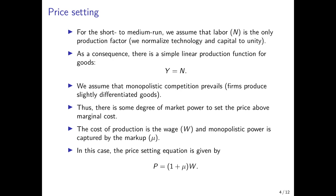These long-run phenomena are dealt with in long-run economic growth models — the Solow model, Ramsey-Cass-Koopmans model, Diamond model, and so on — that capture capital accumulation and technological change. But for now, in the medium run, we normalize them to unity, meaning labor is the only factor of production and firms can only adjust labor input.